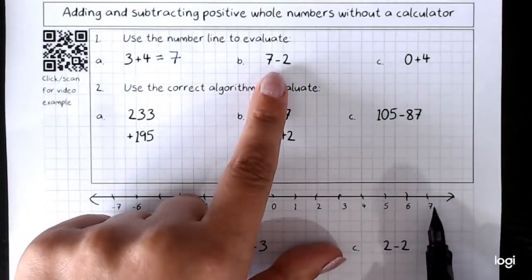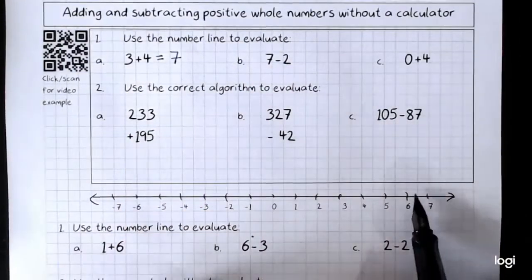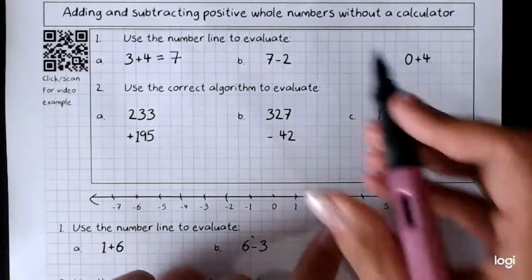7 minus 2. Go to the first number. We're subtracting, so we're moving to the left. Take away 2. We've got 5.